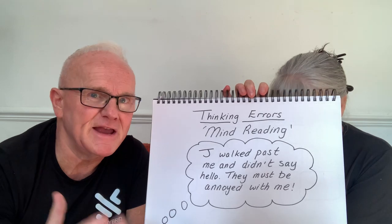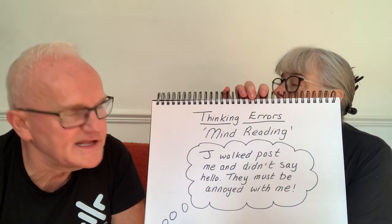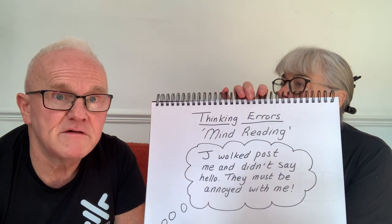The final one is called mind reading. An example: 'Jay walked past me and didn't say hello — they must be annoyed with me.' When we mind read, we assume things; we take a little mannerism from a friend and act as if we have the ability to read their mind, inventing things about what they think or feel about us. Do we actually know that's true? Absolutely not. We're usually taking one little thing, blowing it out of proportion, or making things up about it.